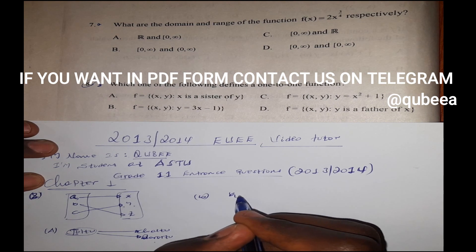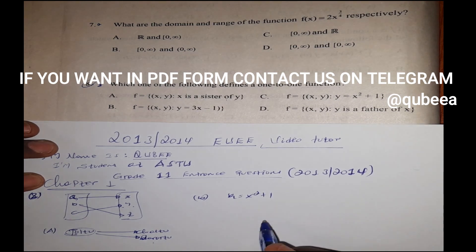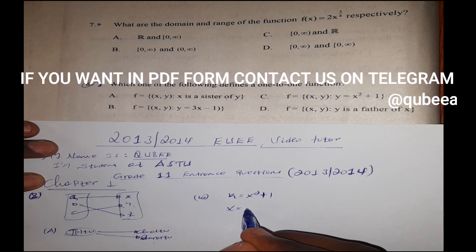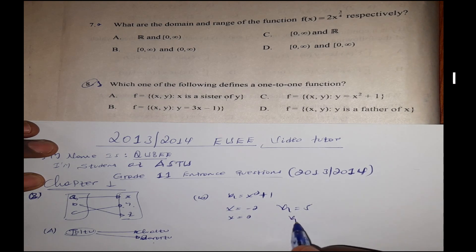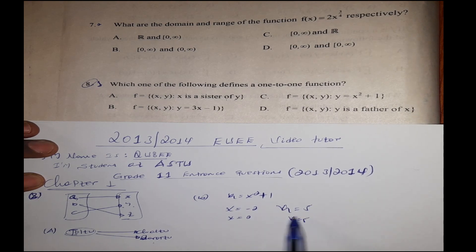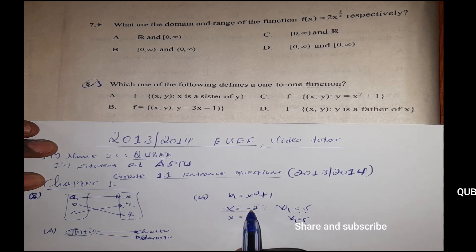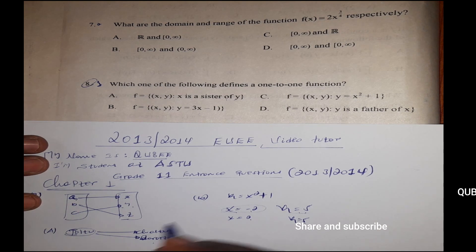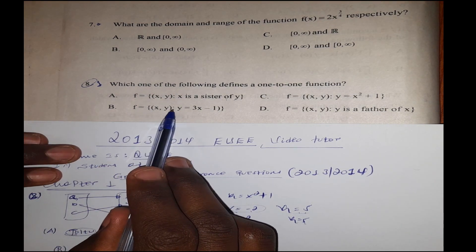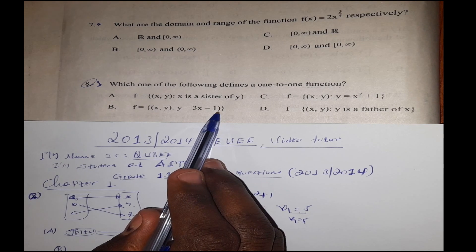This is the first one: y is equal to x squared plus 1. For example, if x is negative 1 and x is positive 1, both give y is positive 2, so this is not a one-to-one function. The one-to-one function — y is equal to 3x minus 1 — is the correct answer.